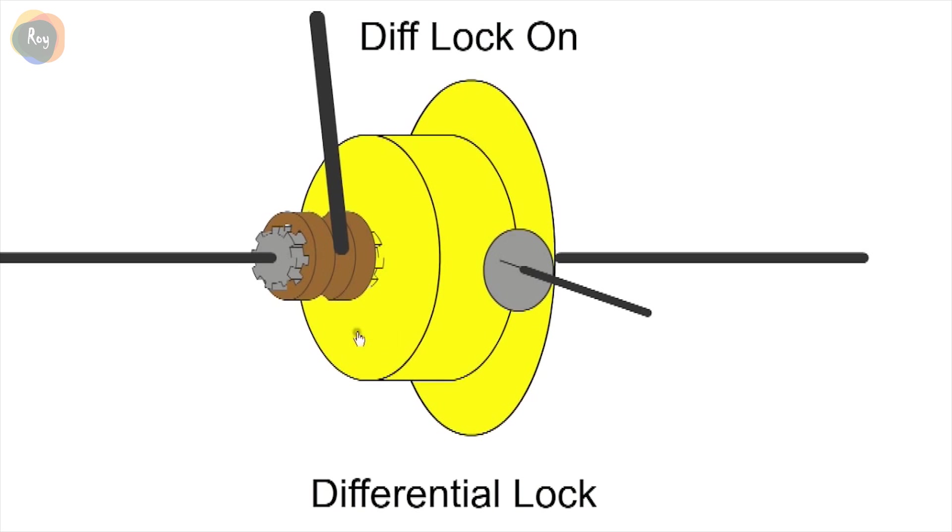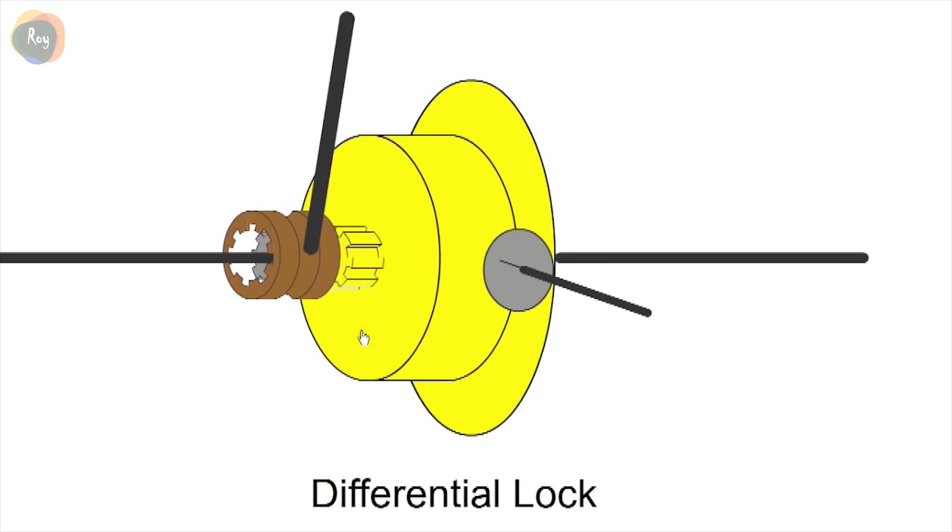A locked diff will allow no difference in speed between both wheels and is normally only used on off-road vehicles.